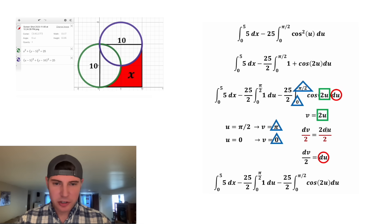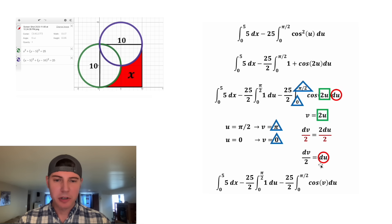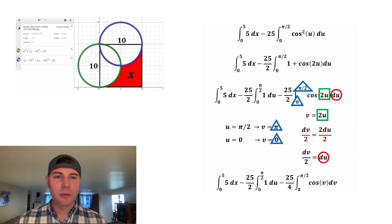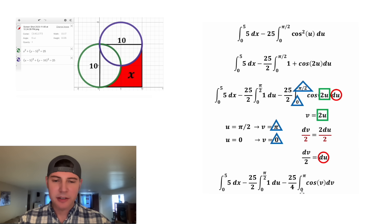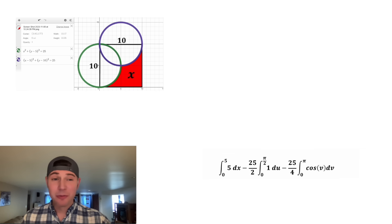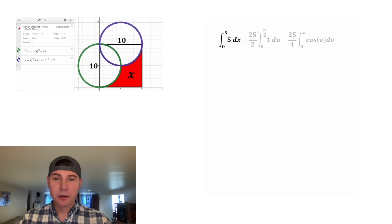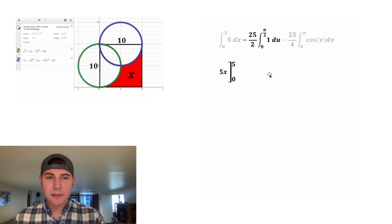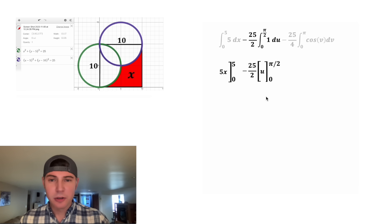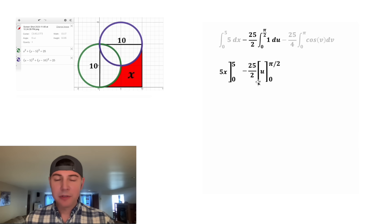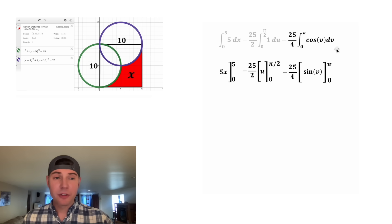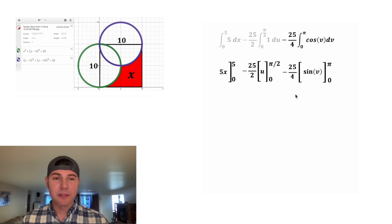Applying the v-substitution: replace 2u with v, replace du with (1/2) dv — so the 2 in the denominator becomes a 4 — and update the limits from pi over 2 and 0 to pi and 0. Now we've seriously cleaned up the integral. For the first integral, the antiderivative of 5 is 5x, evaluated from 0 to 5. For the second, the antiderivative of 1 is u, giving negative 25 over 2 times u evaluated from 0 to pi over 2. For the third, the antiderivative of cosine v is sine v, evaluated from 0 to pi, multiplied by negative 25 over 4.